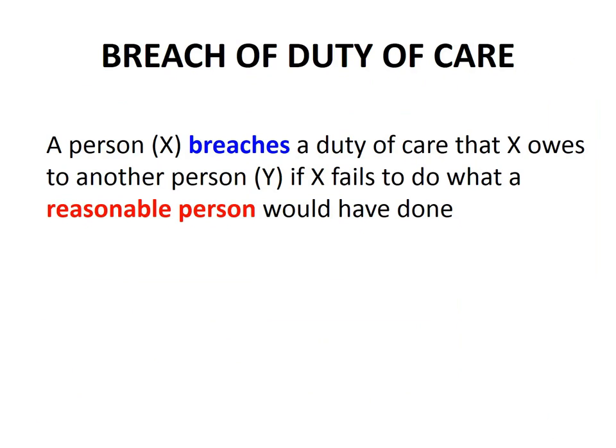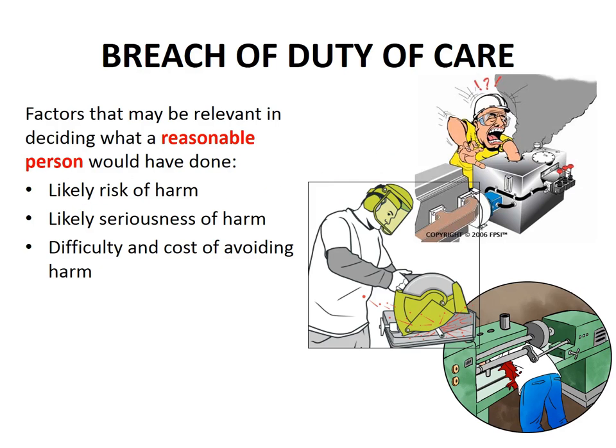This brings us to the second element of negligence: the defendant must have done or failed to do something that breaches the duty of care owed to the plaintiff. A person X breaches a duty of care owed to another person Y if X fails to do what a reasonable person would have done. In deciding what a reasonable person would have done, there are a number of factors to consider, and some of these factors are included on this slide.